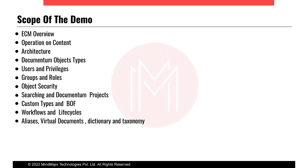The second pillar is process management services. Process management features include workflow and lifecycle. Workflow typically represents business processes and models event-oriented applications. The lifecycle defines the business rules that can be applied to different types of documents.